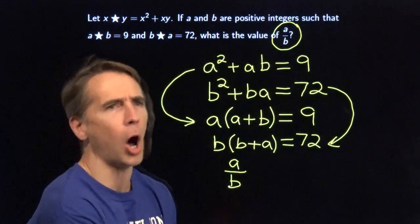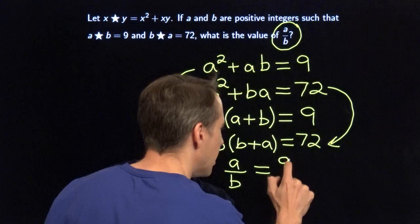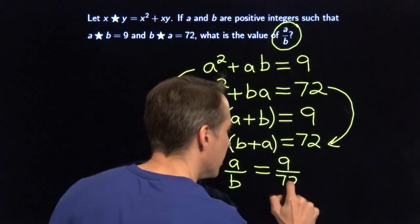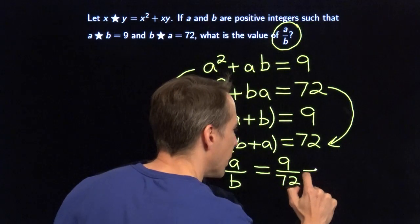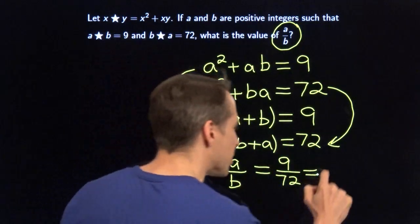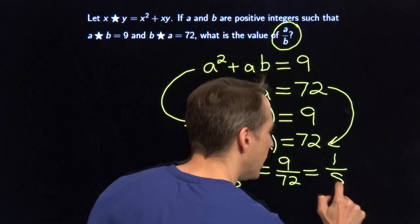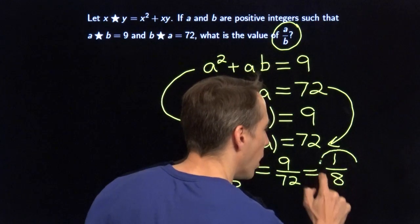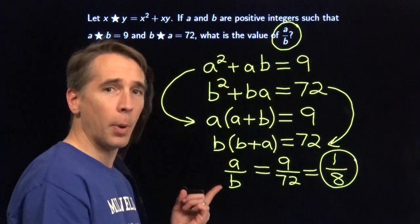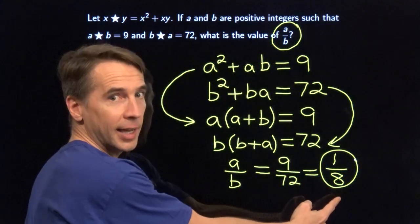We found the ball. And on the other side, 9 divided by 72 — we simplify 9 over 72 and we get 1/8. We found the ball without ever finding a and b.